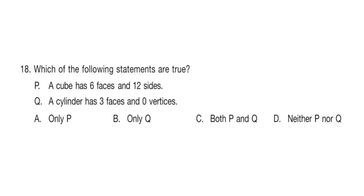Question 18: Which of the following statements are true? P: A cube has 6 faces and 12 sides. Q: A cylinder has 3 faces and 0 vertices. The correct answer is option C — both P and Q are true.